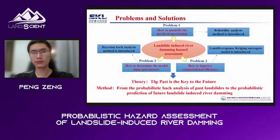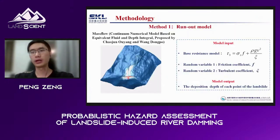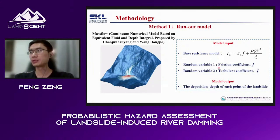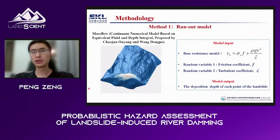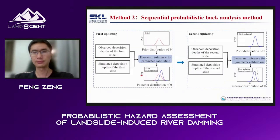Our method goes from the probabilistic back-analysis of past landslide-induced river damming events to the probabilistic prediction of future events. First, we construct the landslide run-out simulation model based on the basal-resistance model. It includes two key parameters: the friction coefficients and the turbulence coefficients, both considered as random variables in this study. The model simulates the run-out process and outputs the deposition depth at each point.